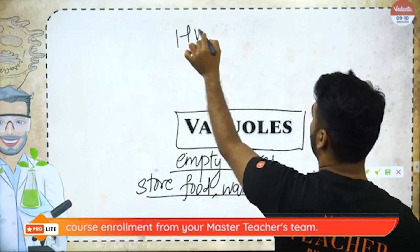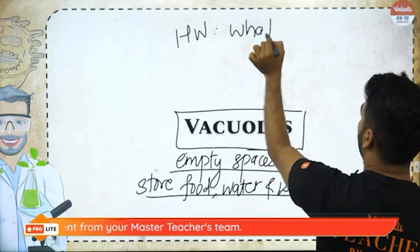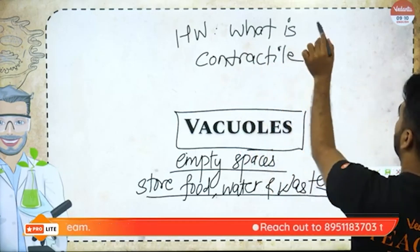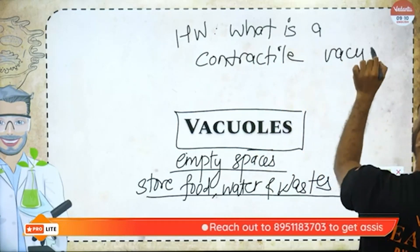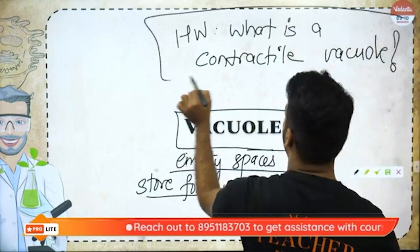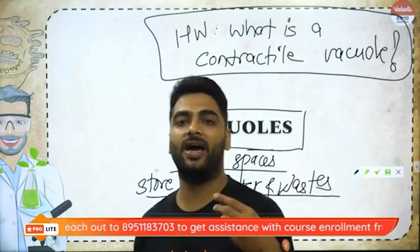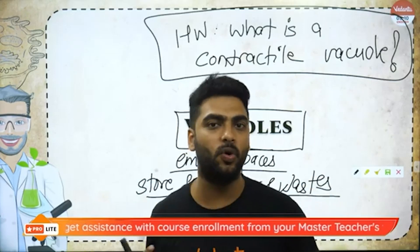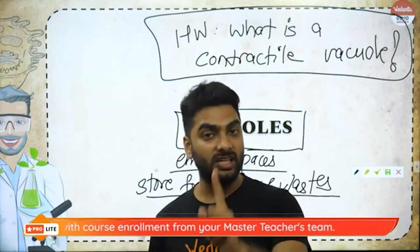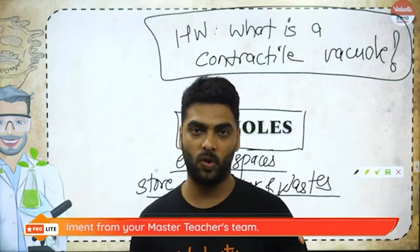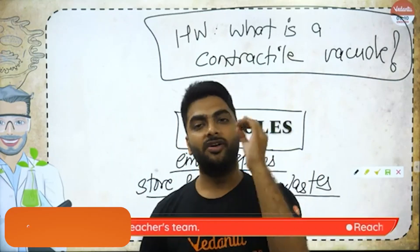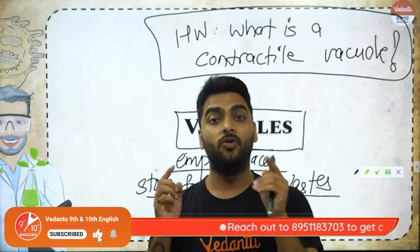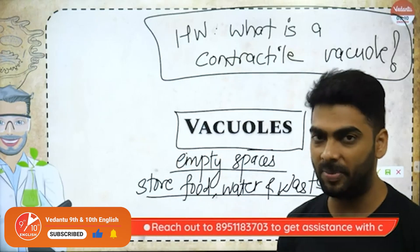I have one more question for you: what is a contractile vacuole? Tell me this answer in the comment section below. We need to be experts on biology, so research and give answers to the homework questions. Also tell me which cell organelle, along with plastids, has its own DNA and ribosomes — and what do you mean by contractile vacuoles present in amoeba? I'm already giving you a hint.